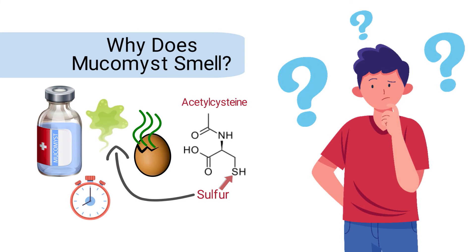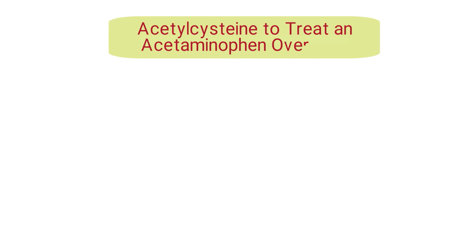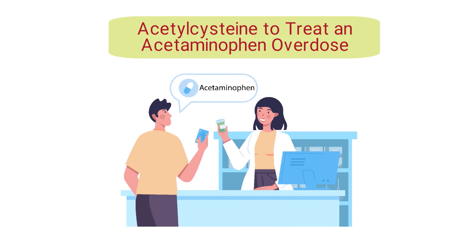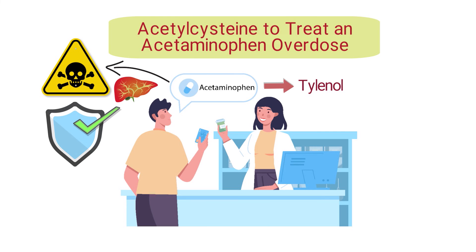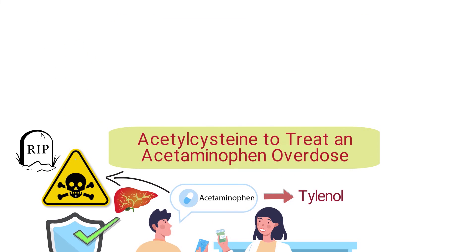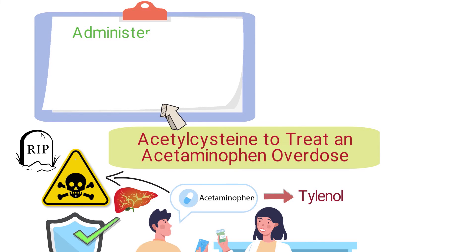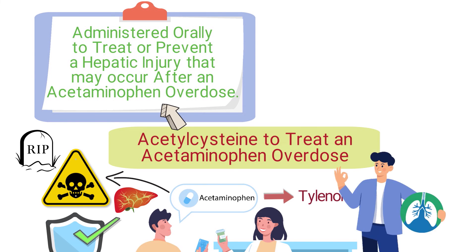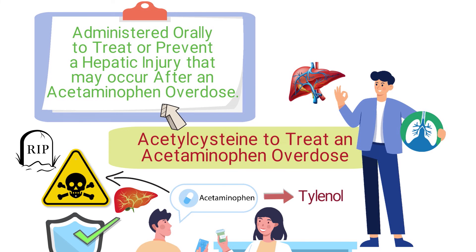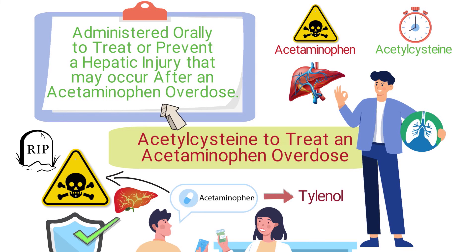Acetylcysteine can also be used to treat an acetaminophen overdose. Acetaminophen is a common pain reliever found in over-the-counter medications such as Tylenol. While it is generally safe when used as directed, it can be toxic in large doses, leading to liver damage and even death in severe cases. Acetylcysteine can be administered orally to treat or prevent hepatic injury after an overdose, by helping replenish depleted reserves in the liver that enhance the non-toxic metabolism of acetaminophen. The sooner it is administered, the better the chance of preventing liver damage.